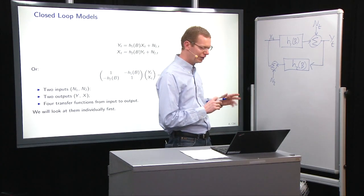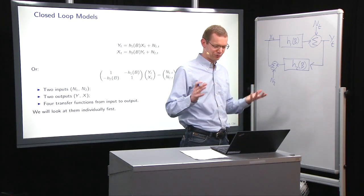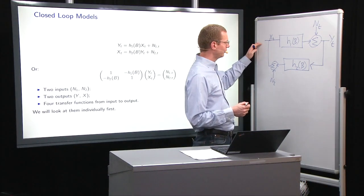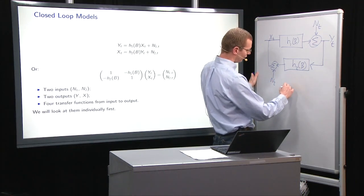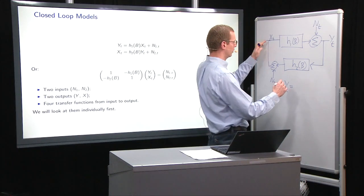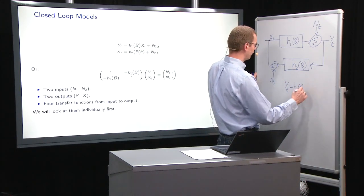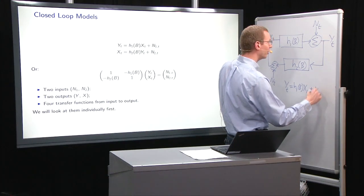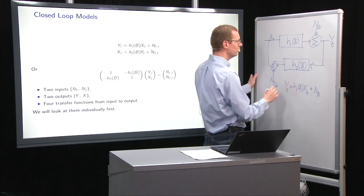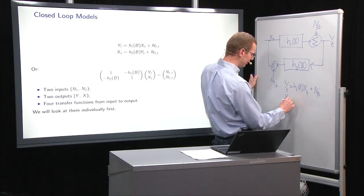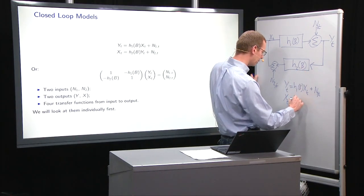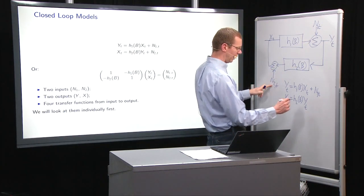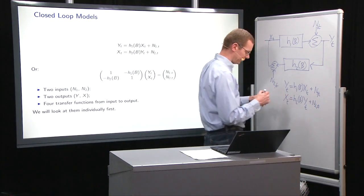Now we can write this in many ways. One such way of writing this whole thing is to do it in a matrix vector form. When you look at the individual time series, as we had last week, YT equals H1 of B on XT plus NT, let's call it N1. And correspondingly we have XT can be written as H2B on YT, and then we add N2T there. So this is our system.